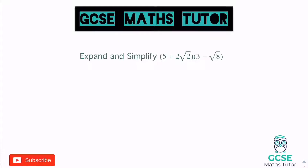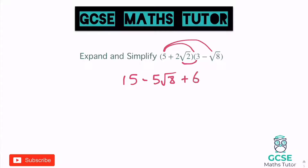5 times 3 is 15. 5 times negative root 8 is negative 5 root 8. 2 root 2 times 3 — remember numbers times numbers, surds times surds — so it's 2 times 3 which is 6, giving plus 6 root 2. Then finishing the last part: it's positive times negative, so negative. 2 times 1 is 2, and root 2 times root 8 gives us 2 root 16. Negative 2 root 16 — root 16 is 4 — so that's negative 2 times 4 which is negative 8.